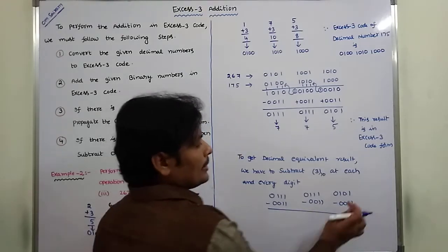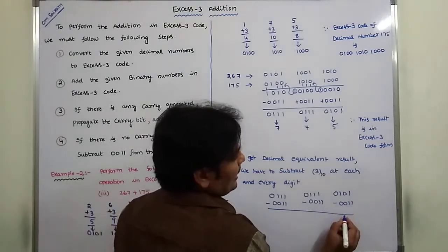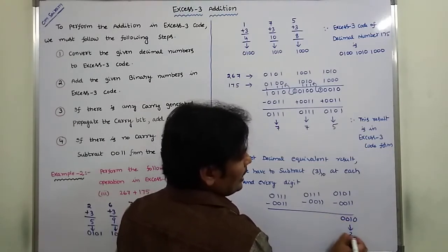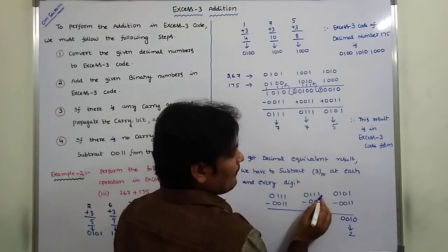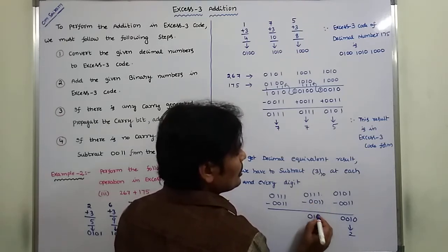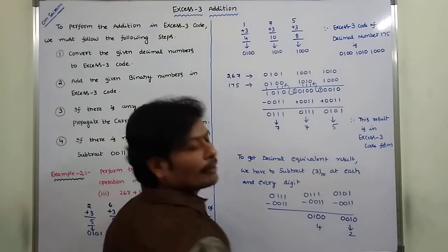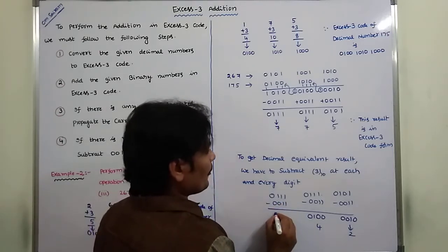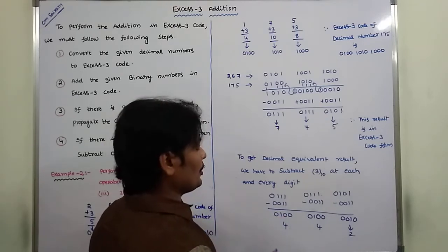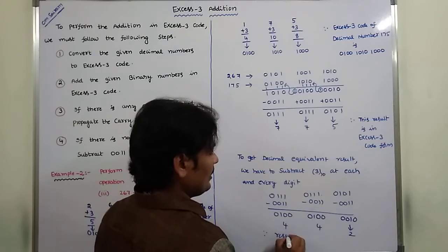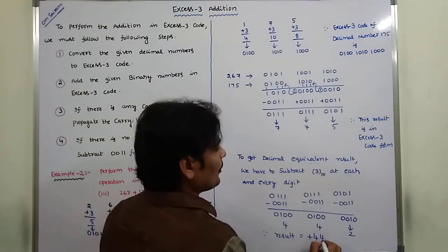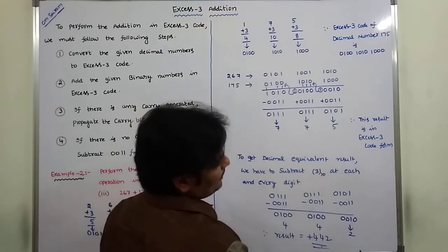After subtracting 3 from each digit: the first value is 5, and 5 minus 3 is 2 — binary 0010, decimal equivalent 2. The next value is 7, and 7 minus 3 is 4 — binary 0100, decimal equivalent 4. The last value is 7, and 7 minus 3 is 4 — binary 0100, decimal equivalent 4. Therefore the result is 442.